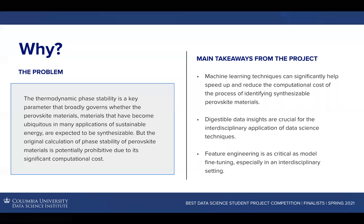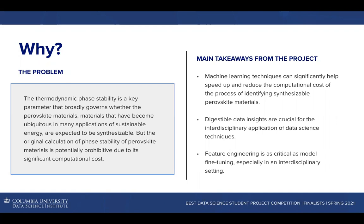Perovskites are highly efficient materials for solar cells due to their exceptional capacity for absorbing light and transporting electric charge. However, the largest hurdles in implementing them on a commercial scale are concerns regarding their relatively weak long-term stability. As data scientists, we are particularly interested in this topic mainly for two reasons. First, the synthesizability of perovskite materials is broadly governed by a clearly formulated numeric parameter called the thermodynamic phase stability. Second, it has been shown in previous research that the calculation of the thermodynamic phase stability of perovskite materials can be approximated by a machine learning model.